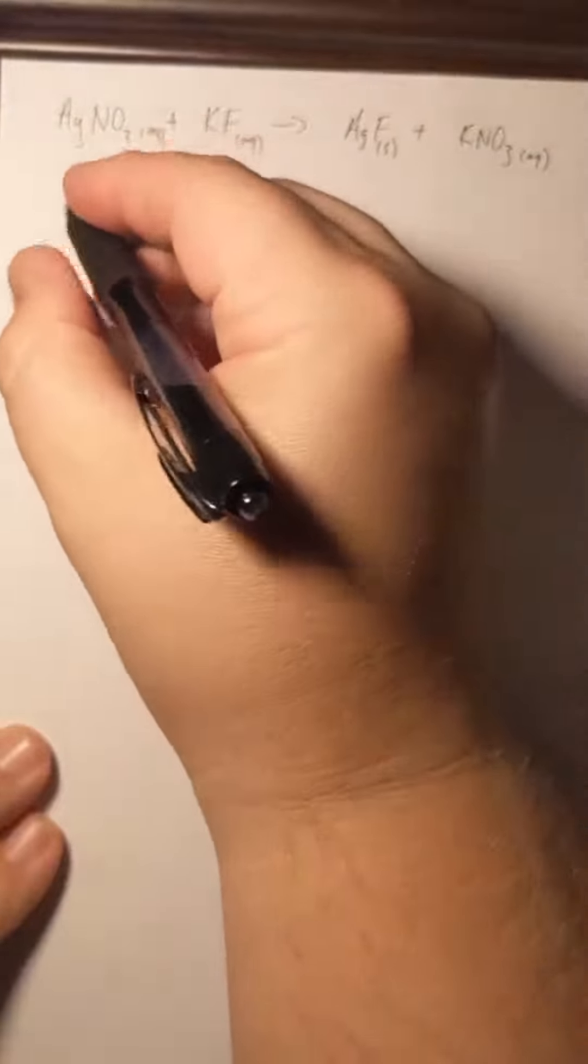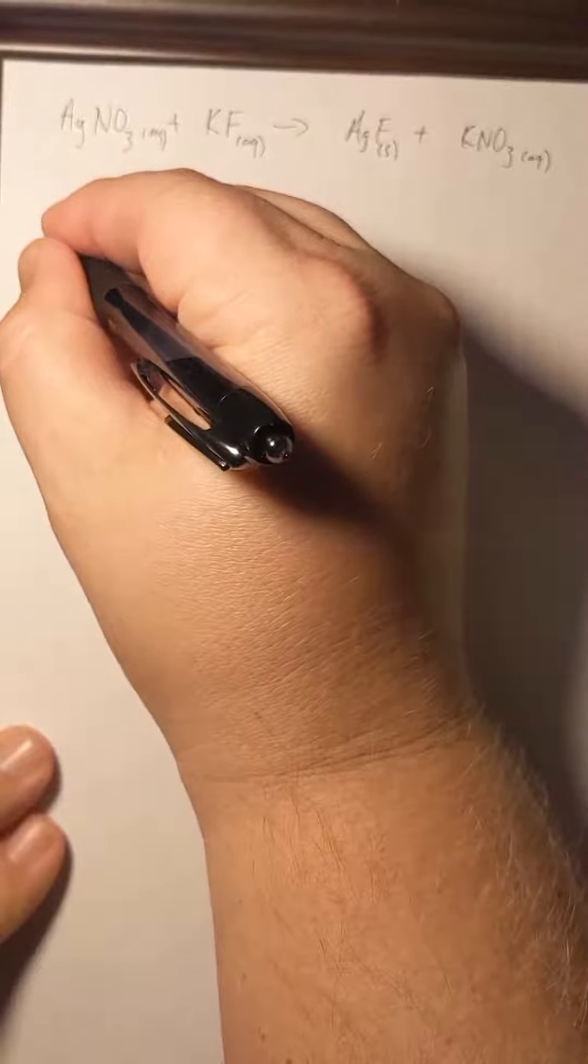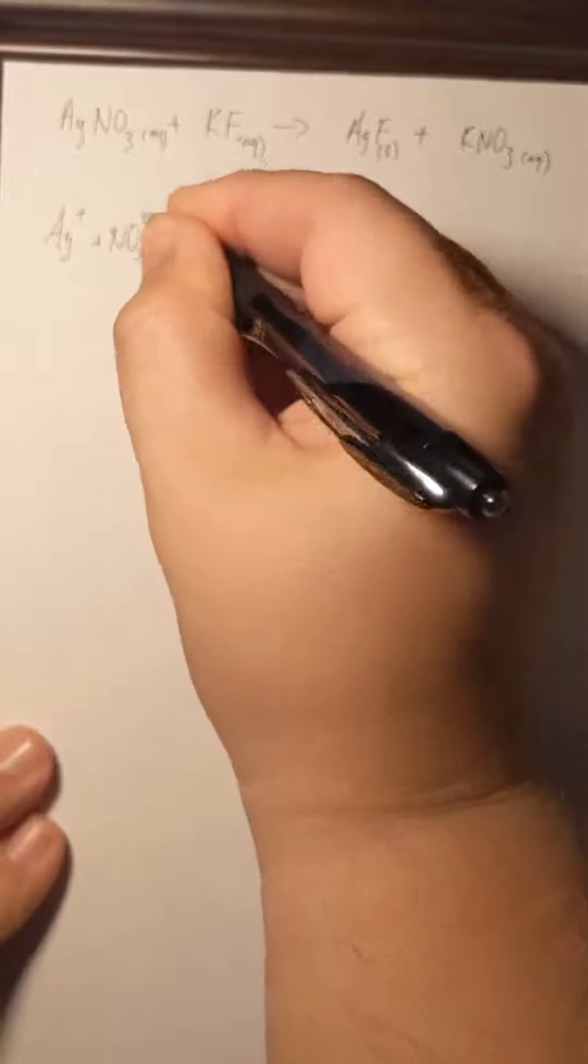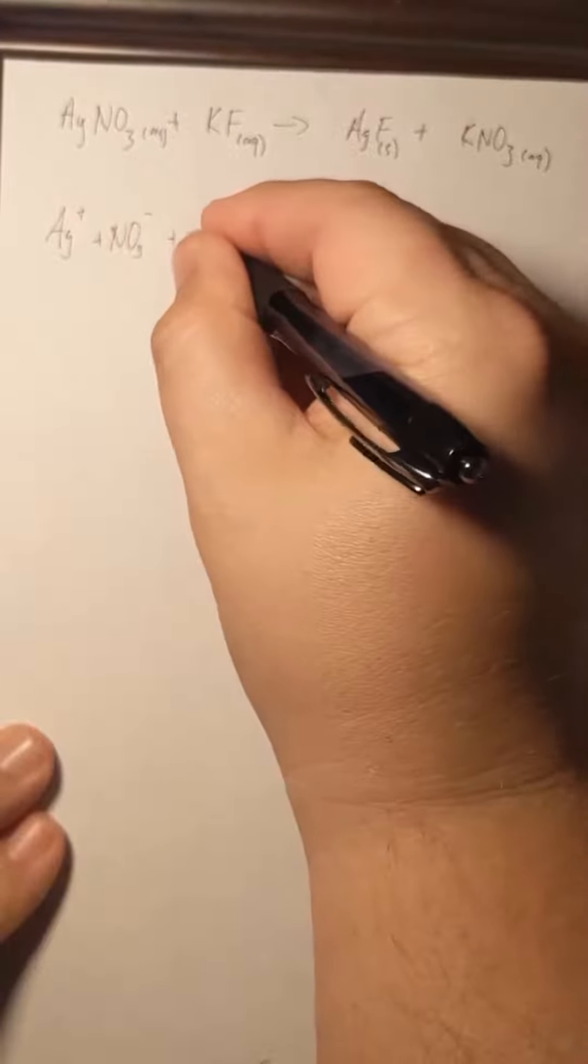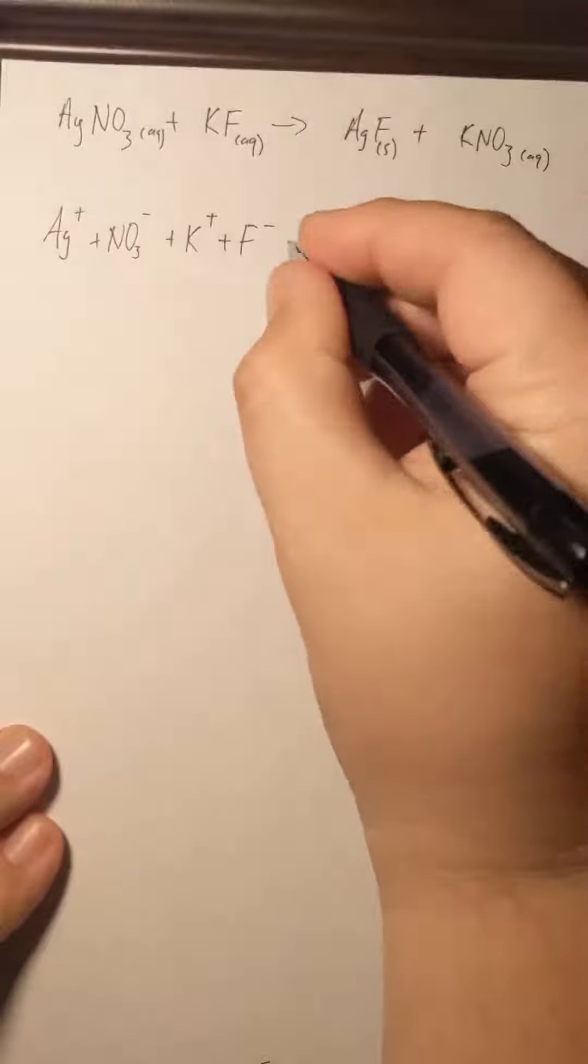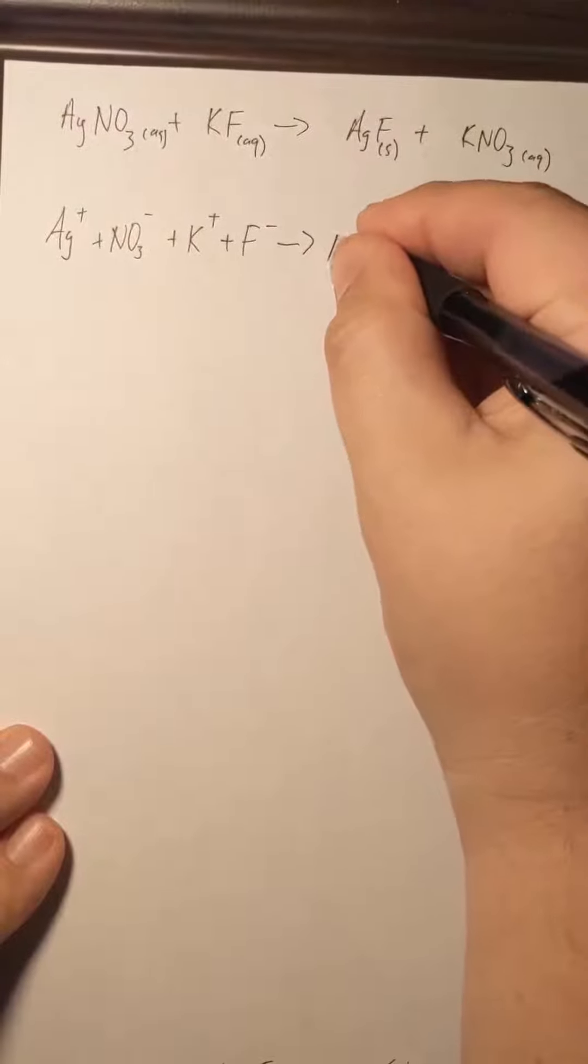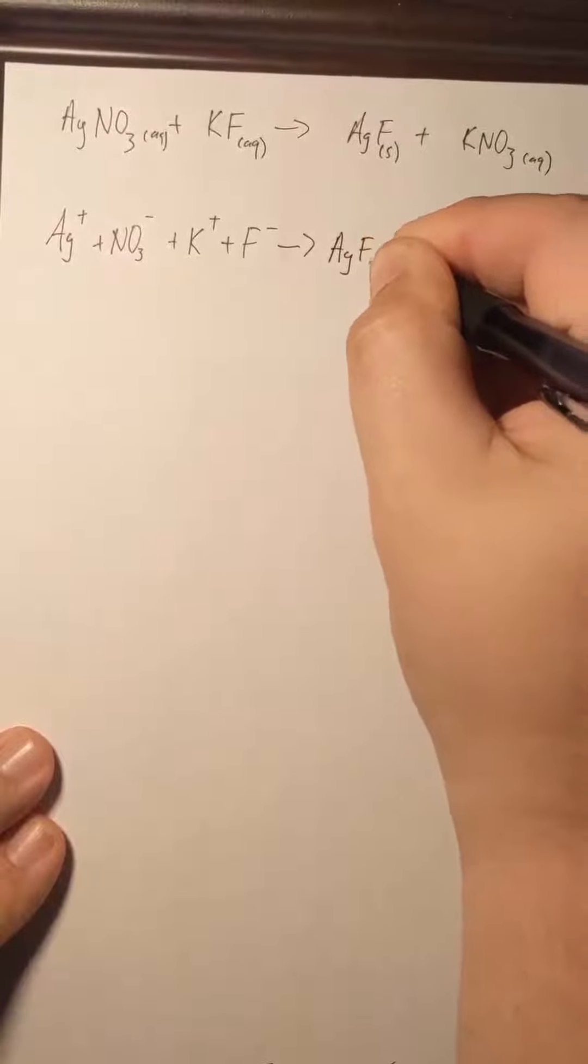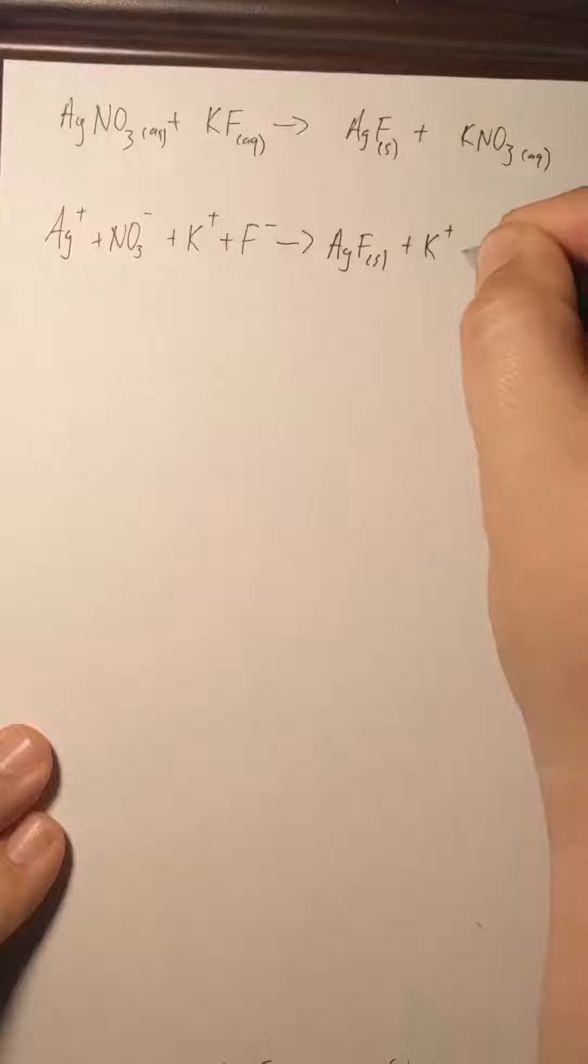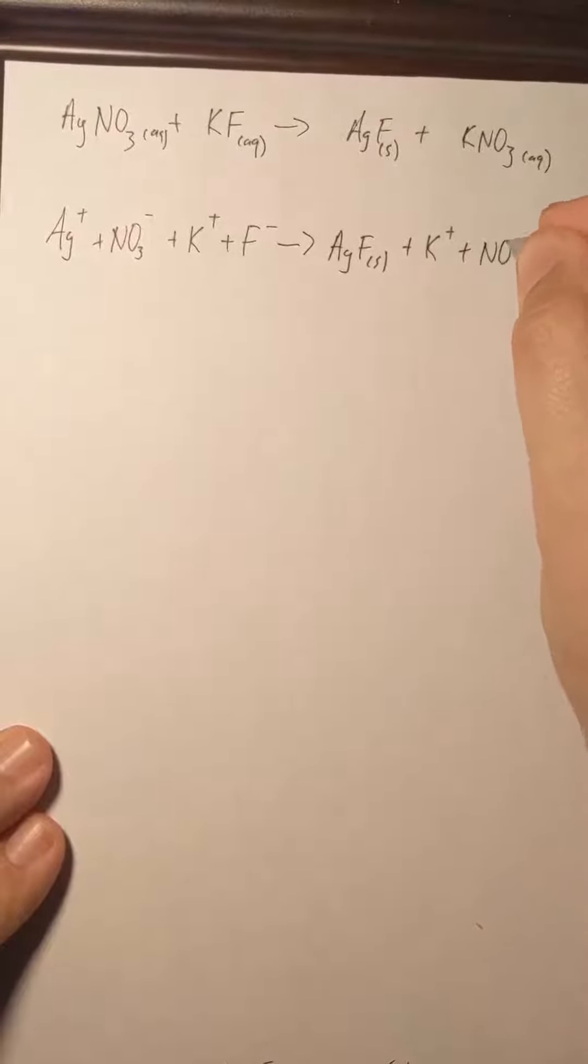So to write it as the complete ionic equation: Ag+ plus NO3- plus K+ plus F- gives us AgF as a solid plus K+ plus NO3-.